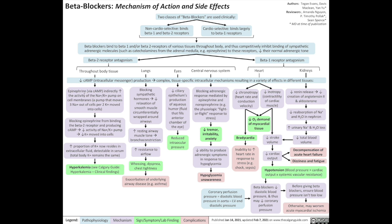Throughout the body, keep in mind that epinephrine normally indirectly increases the activity of the sodium-potassium pump on cell membranes, which moves three sodium ions out of cells per two potassium ions moved into the cells. So blocking epinephrine from binding the beta 2 receptor reduces the activity of the sodium-potassium pumps and reduces the amount of potassium ions moved into the cells. This increases the proportion of potassium that now resides in the extracellular fluid, which in turn is detectable in the serum, even though the total body potassium remains the same.